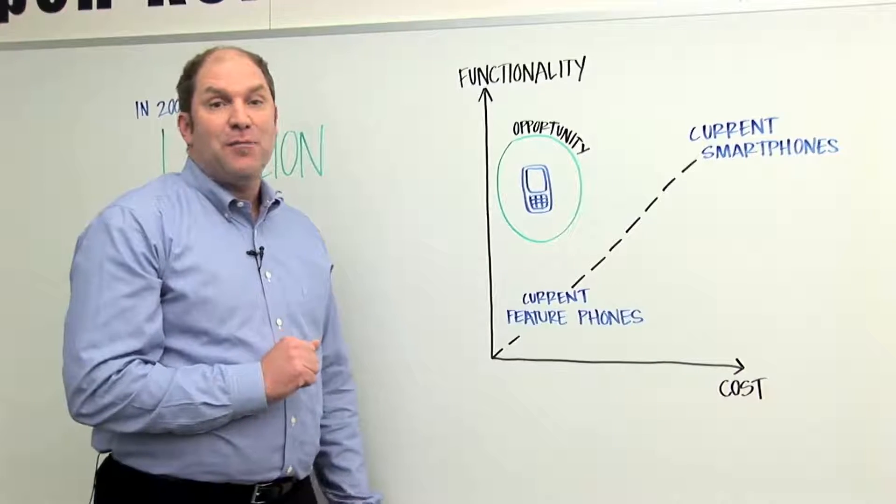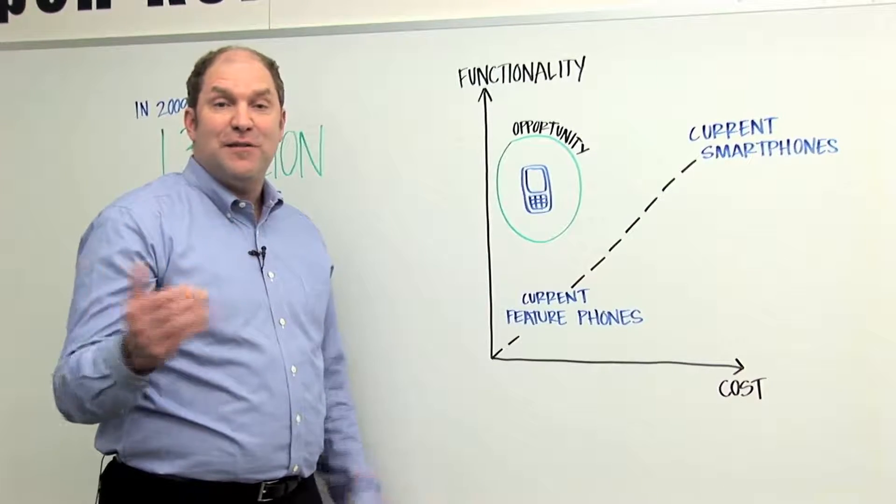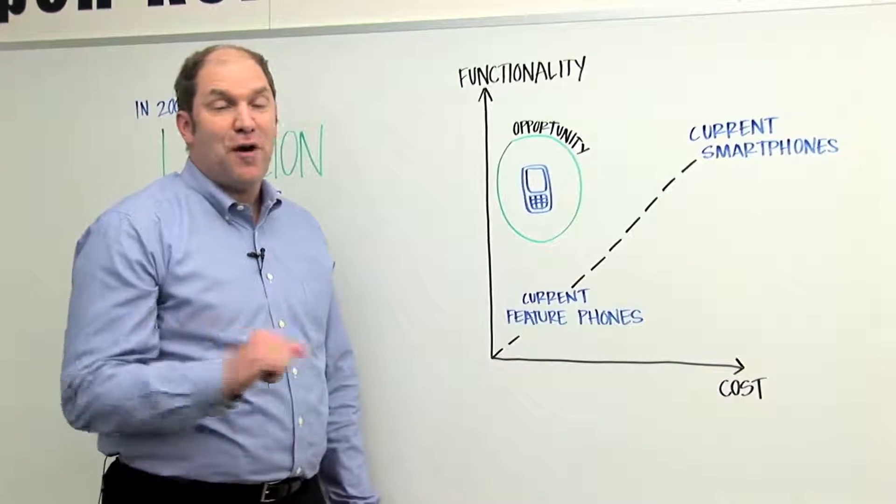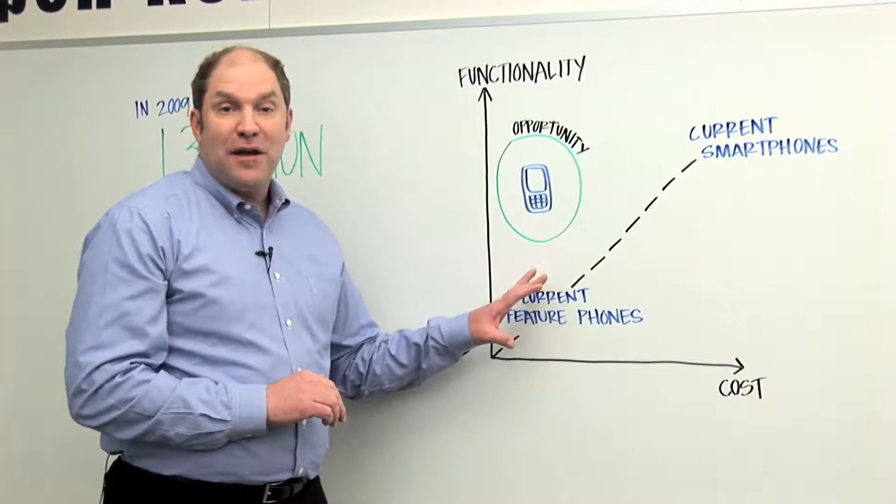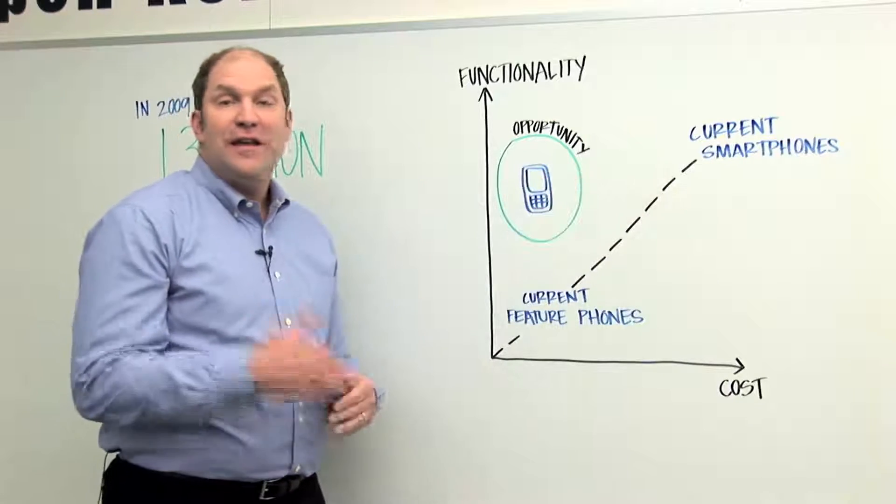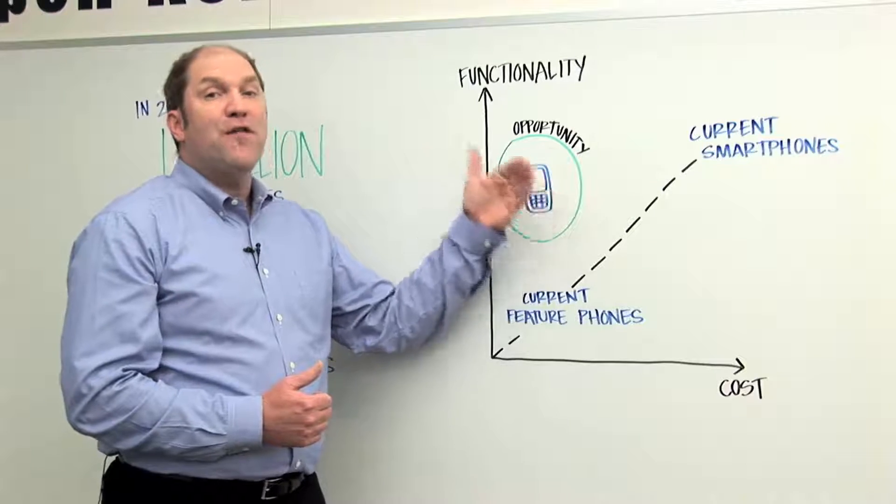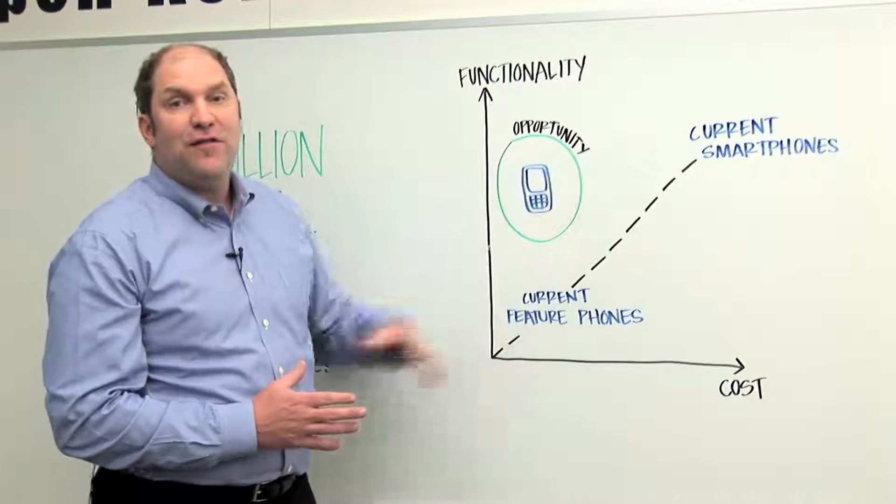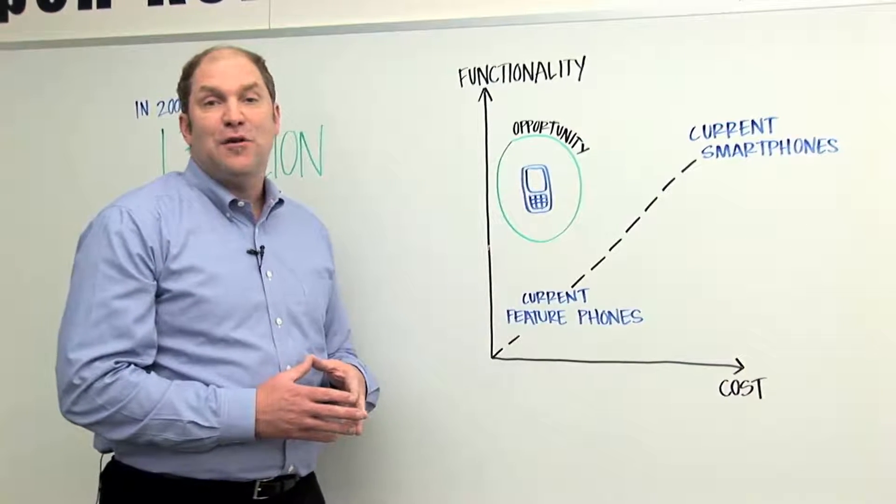Now, the definition of a mass market smartphone is a phone that runs a smartphone operating system and therefore supports the kinds of applications and services that we currently associate with smartphones, but at a feature phone price. Because today, the main reason not everyone carries a smartphone is purely economic. If we can find a way to make the cost of a smartphone-enabled handset relatively close to the cost of a feature phone handset, then the value proposition for the customer is clear.